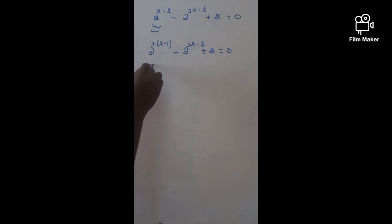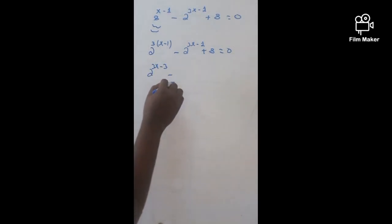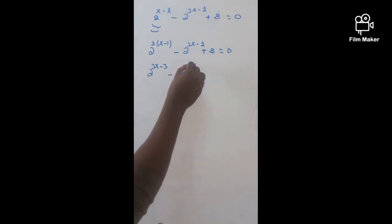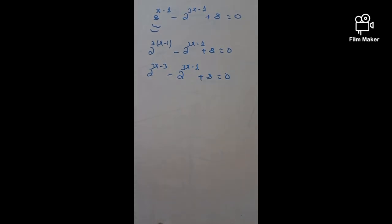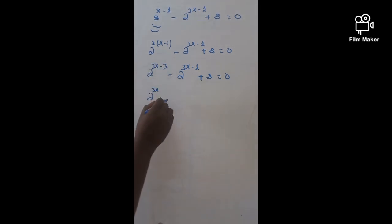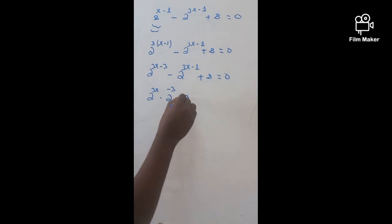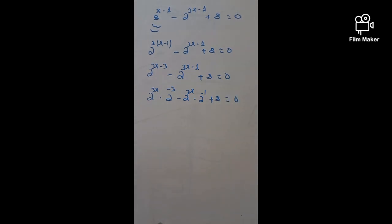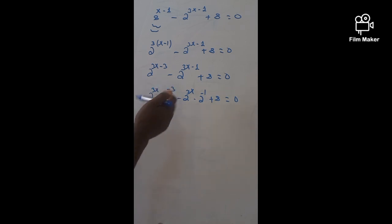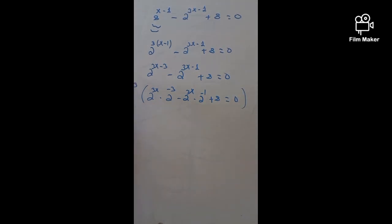So, this is going to be written as 2 raised 3X minus 3, minus 2 raised 3X minus 1, plus 8, that is going to be 0. Then, let's multiply both sides by 2 raised minus 3.